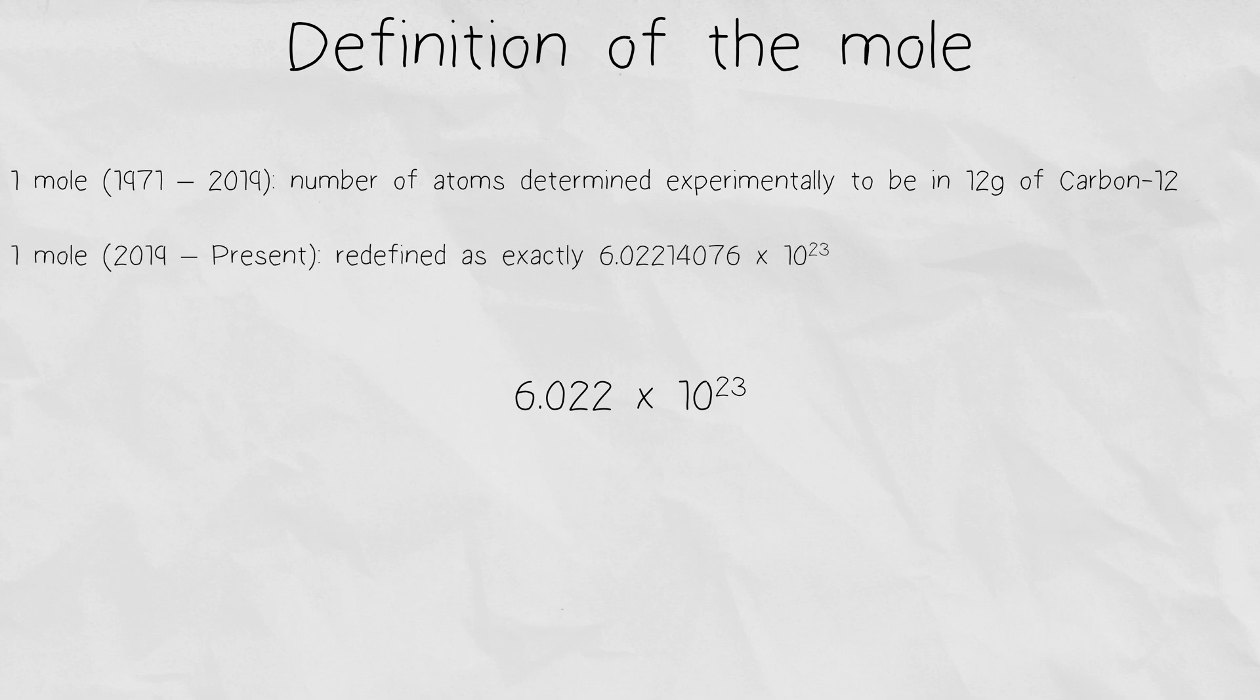In 2019, the SI system moved away from that experimental definition, and instead just defined the number as exactly 6.02214076 times 10 to the 23, but you can still shorten it to 6.022 times 10 to the 23, and it will still give you a very precise answer. This number is also referred to as Avogadro's constant in honor of the Italian physicist who paved the way for the discovery of the mole.